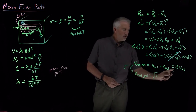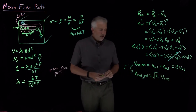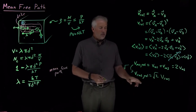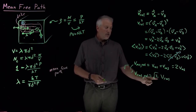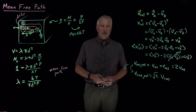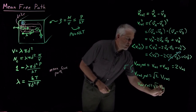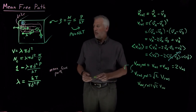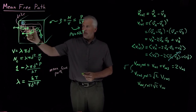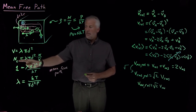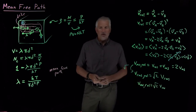Taking the square root of both sides, the root mean square relative velocity equals the square root of 2 times the root mean square velocity of any one molecule. Likewise, the average relative velocity is root 2 larger than the average velocity. This means our moving molecule will collide with square root of 2 times as many molecules as originally expected, because the relative velocity is larger than the velocity of molecule A alone.